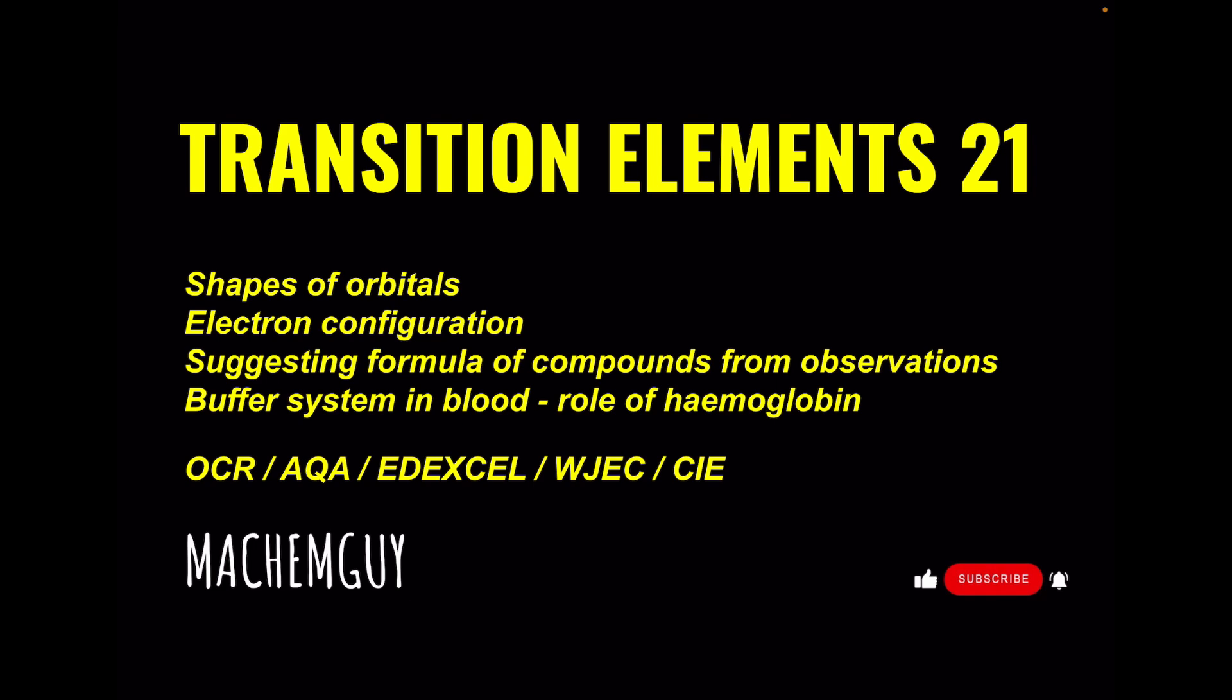The question deals with shapes of orbitals, electron configuration, suggesting the formula of compounds from observations, and there's a question on the buffer system in blood with a focus on the role of haemoglobin.